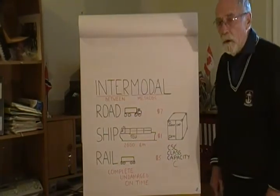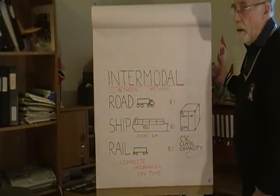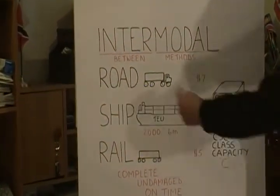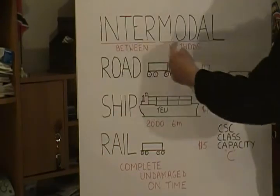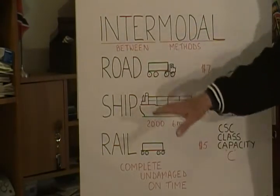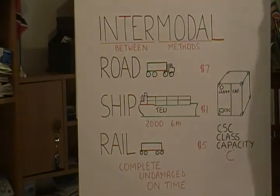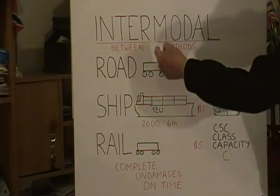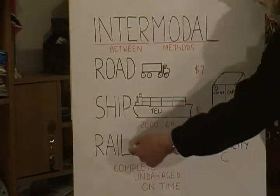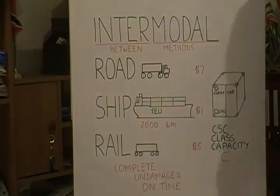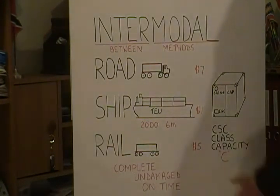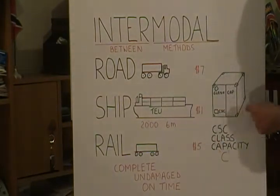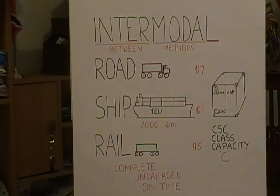Intermodal transport moves goods from seller to buyer, door to door. Intermodal means between methods — it goes by road, ship, and rail through the whole transport system. The client wants their goods moving through that complete system, undamaged and on time. The main vehicle within this, of course, is the container.